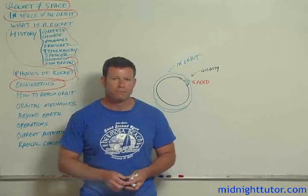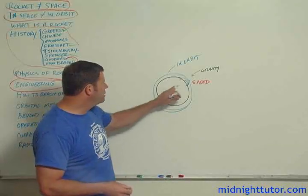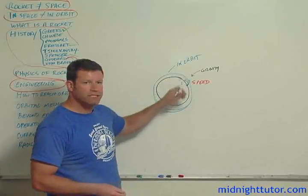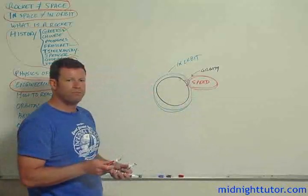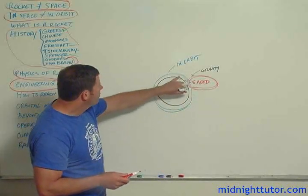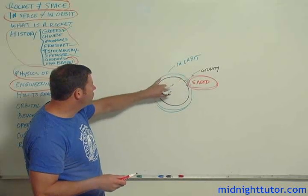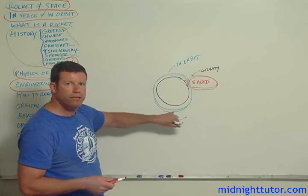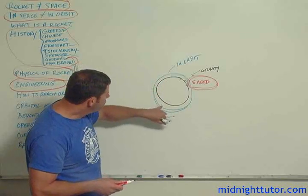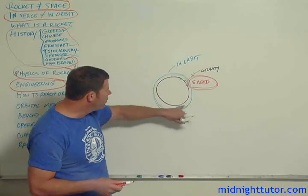Because what being in orbit effectively is, is you've achieved the speed—the key is speed. That's the physical attribute that matters. You've achieved the speed such that you're falling at a rate that coincides with the curvature of the Earth. And so as you fall, you never touch the Earth, you just fall along with it.